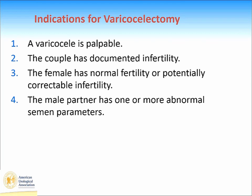The AUA has put forth clear indications for varicocelectomy. First, the varicocele must be palpable and therefore clinical. Second, the couple needs to have documented infertility. Third, the female should have either normal fertility or potentially correctable infertility — if the woman is older or has poor ovarian reserve and needs assisted reproduction, postponing treatment to fix the varicocele may not be appropriate. Fourth, the male partner needs to have at least one or more abnormal semen parameters.